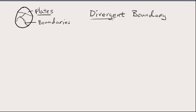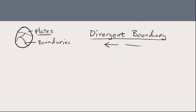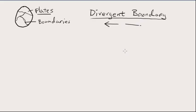So a divergent boundary means that the plates are going to be moving away from each other. So the plates are moving away from each other, and in the previous video we knew that that was the mid-ocean ridge.